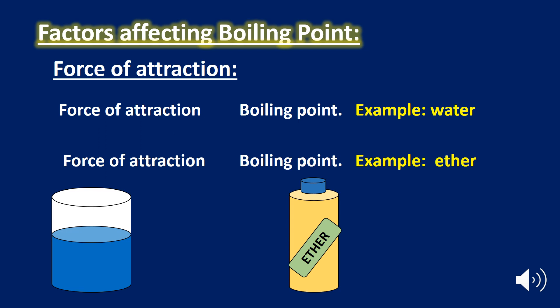The first factor that affects the boiling point is the force of attraction. The strength of the intermolecular forces influences the boiling point of the liquid. Stronger intermolecular forces result in lower vapor pressure, which results in a higher boiling point, whereas weaker forces of attraction result in a decrease in the boiling point.